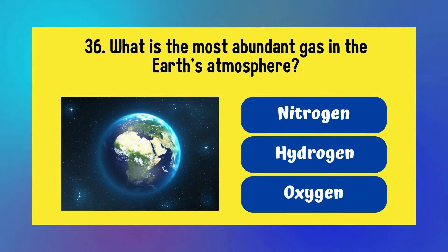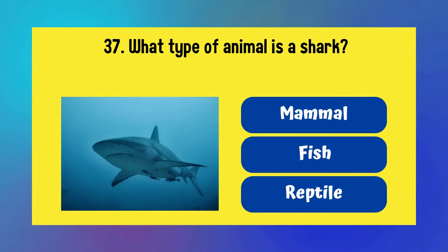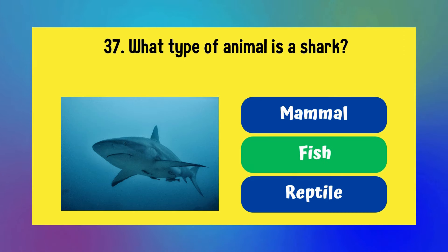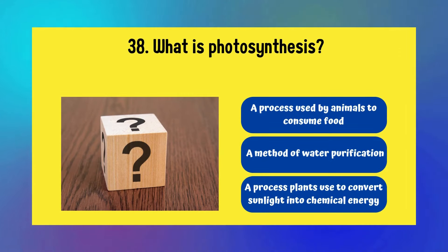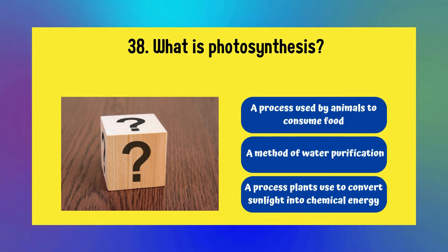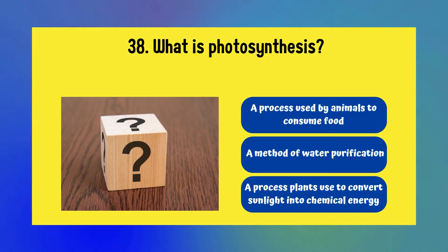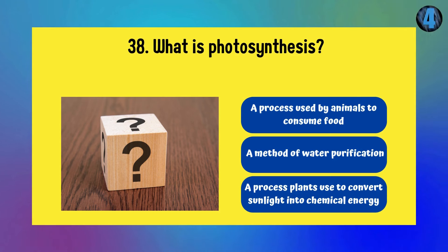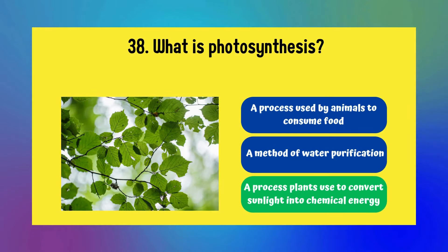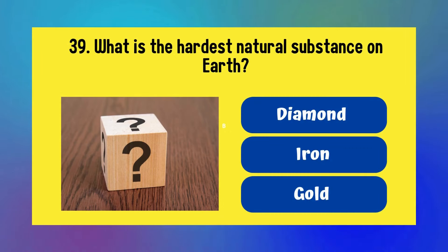What is the most abundant gas in the Earth's atmosphere? Nitrogen, hydrogen, or oxygen? Answer is nitrogen. What type of animal is a shark? Mammal, fish, or reptile? It is a fish. What is photosynthesis? A process used by animals to consume food, a method of water purification, or a process plants use to convert sunlight into chemical energy? Answer is a process plants use to convert sunlight into chemical energy.